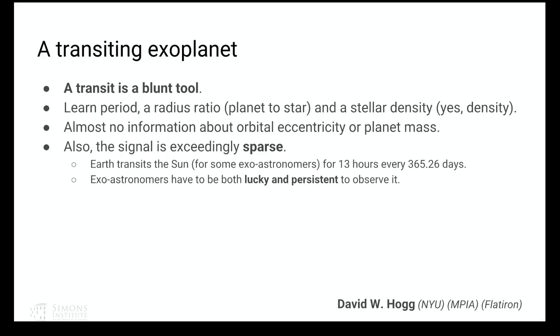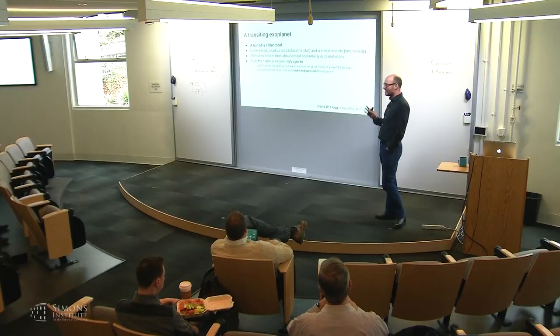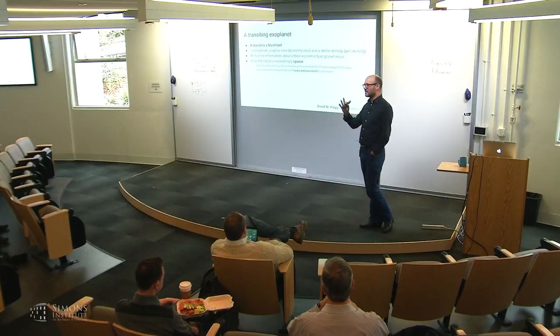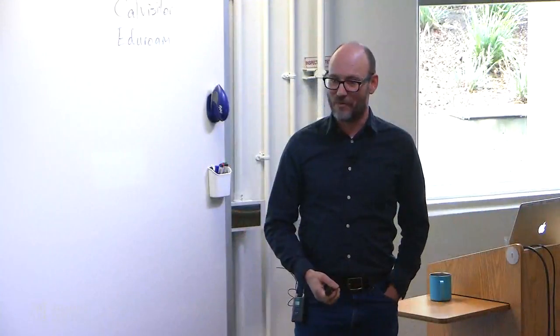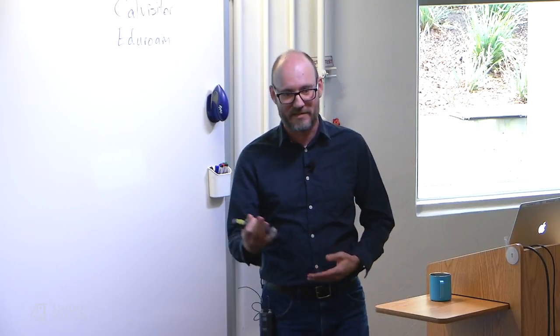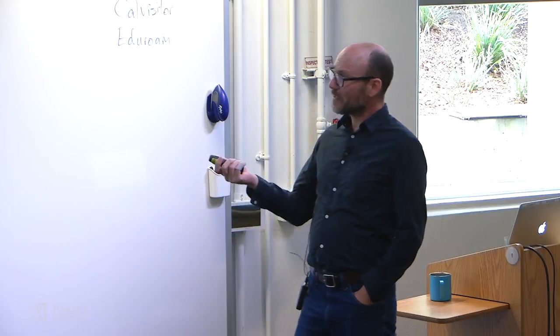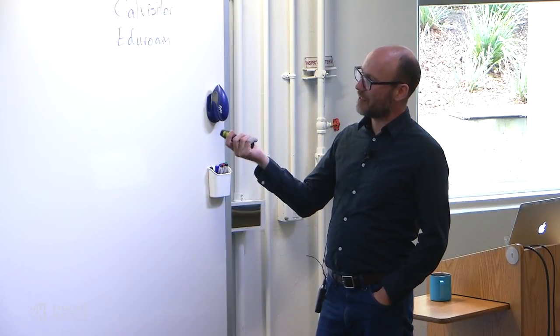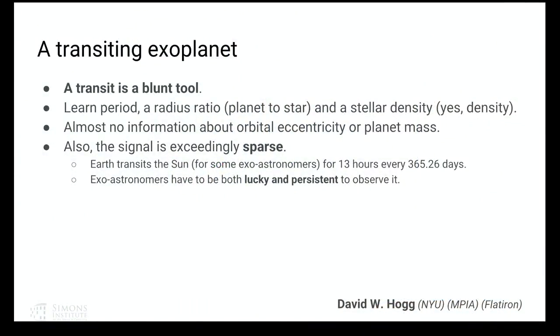Transits are a very blunt tool. When you see a transiting planet, you don't learn that much about the planetary system. You learn the period because you see a periodic dimming of the star, you learn a radius ratio between the star and the planet, and oddly you learn the density of the star. There's a beautiful thing in physics: frequencies are densities in gravitational physics. So we often know the densities of objects much more precisely than anything else — we know the density of the universe very precisely because the Hubble rate is a density.